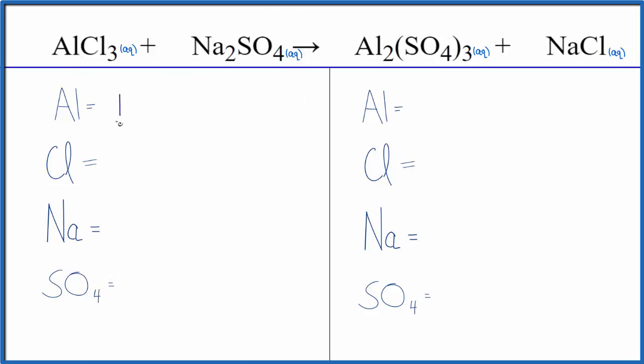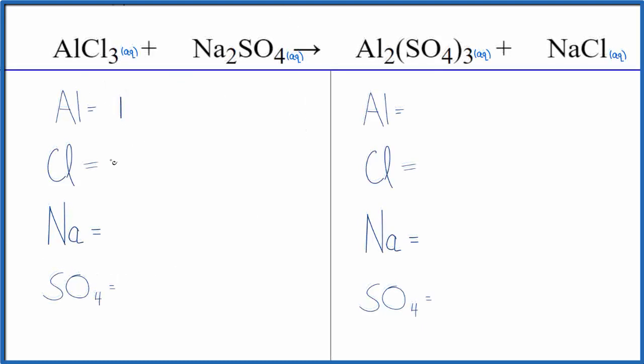We have one aluminum atom, and we have three chlorine atoms, two sodium atoms, and I'm going to call this sulfate, this SO4 here. This sulfate ion is just one thing. I have one sulfate ion because I have it over here as well. So that works. That helps you get these done a little quicker.